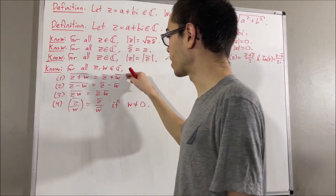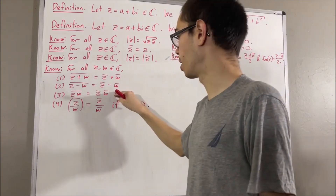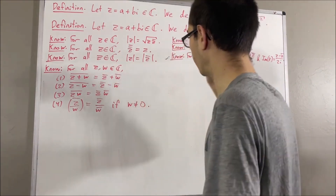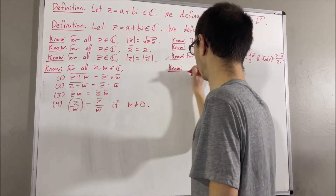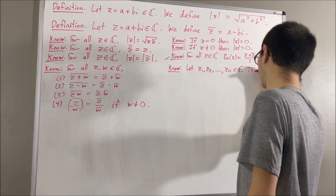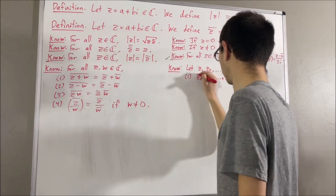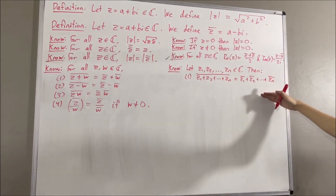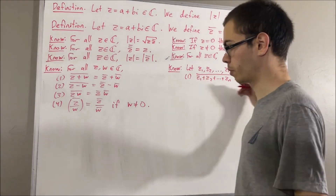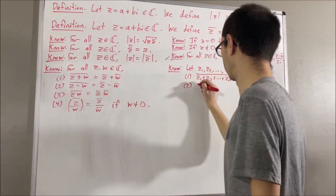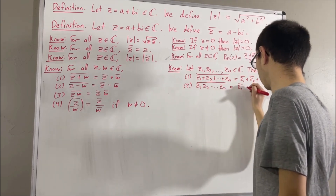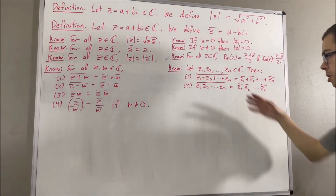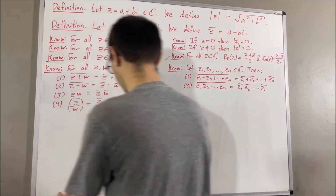Fact number one and fact number three can be generalized to any list of complex numbers, and similarly for fact number two. You just use induction to extend these results.